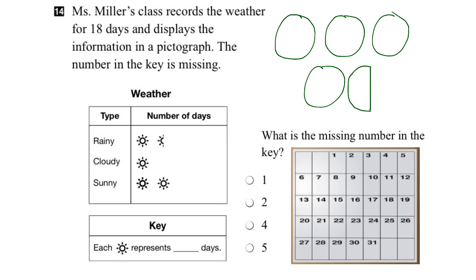Let's mark off 18 days on the calendar. Let's say that Mrs. Miller's class started recording on the first of the month — one day, two days, three days, and so on. So we've marked off the 18 days in which Mrs. Miller's class recorded the weather.